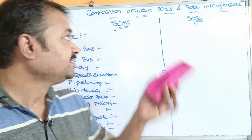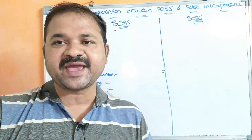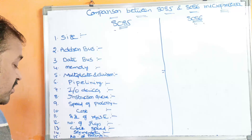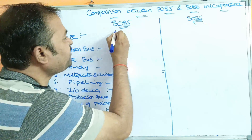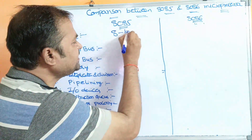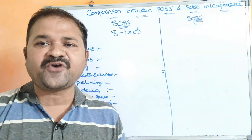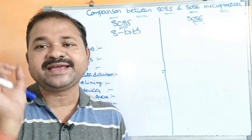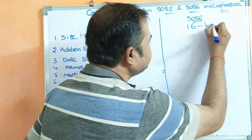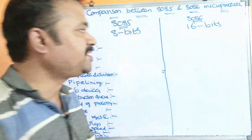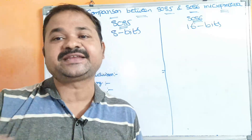In this video, we are going to discuss the differences between 8085 and 8086 microprocessors based on 15 characteristics. The first characteristic is size. The size of the 8085 microprocessor is 8 bits, meaning it performs operations on 8-bit data. Whereas the size of the 8086 microprocessor is 16 bits, meaning it performs operations on 16-bit data.